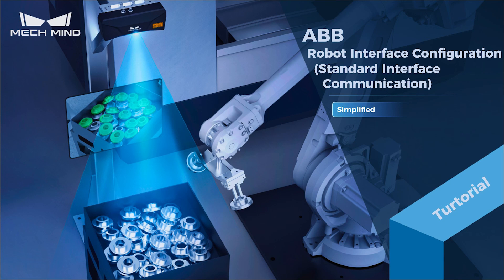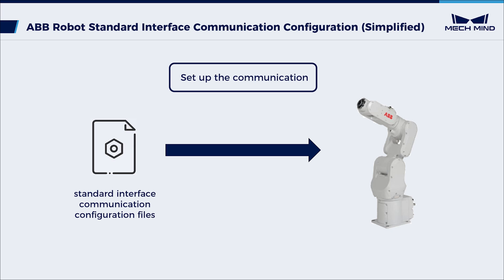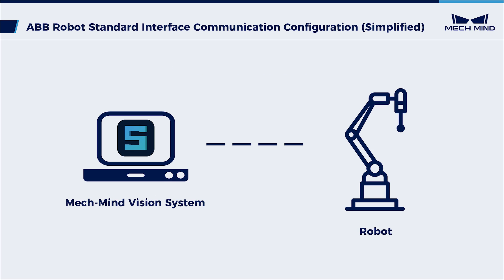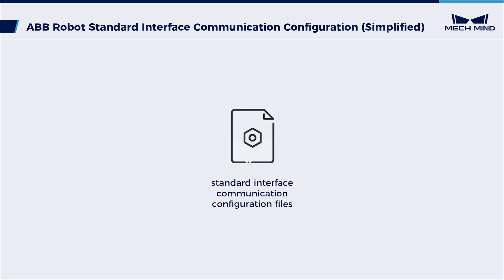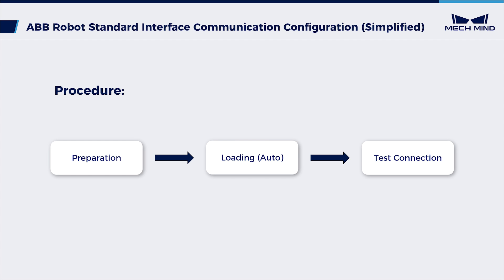This video introduces how to automatically load the standard interface program files to an ABB robot. Loading involves importing robot programs and configuration files into the robot system to establish communication between the vision system and the robot. We will be loading standard interface communication configuration files. These files can assist you in deploying projects.